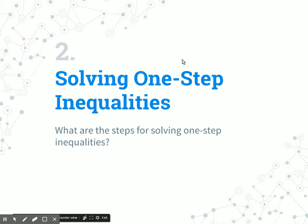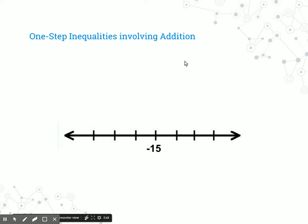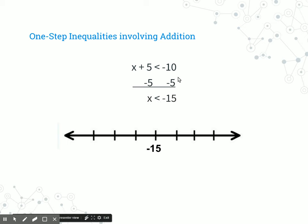Now let's look at some one-step inequalities. So x plus 5 is less than negative 10 — these are the same problems we had earlier. The only difference is now we have inequality signs. The opposite of adding 5 would be to subtract 5 from both sides, telling us x is less than negative 15.